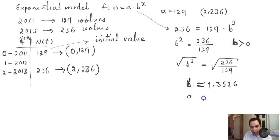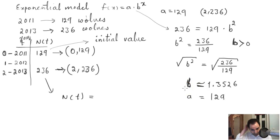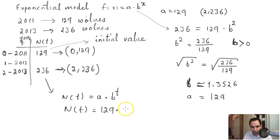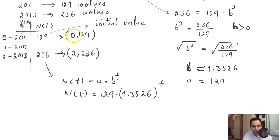So a = 129 and b ≈ 1.3526. Your function becomes n(t) = 129 × 1.3526^t.